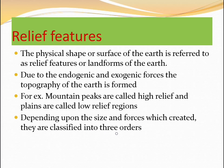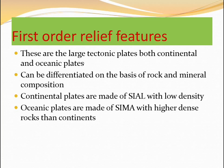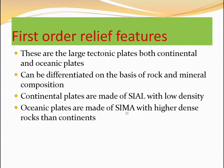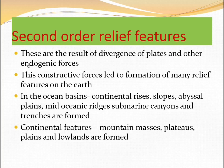Depending upon their size and the forces by which they are created, relief features are classified into three orders: first, second, and third order. First-order relief features are the large tectonic plates — both continental and oceanic plates. Continental plates are made of SIAL, which is silica and aluminium, with lower density, whereas oceanic plates are made of SIMA, which is silica and magnesium, with higher density.